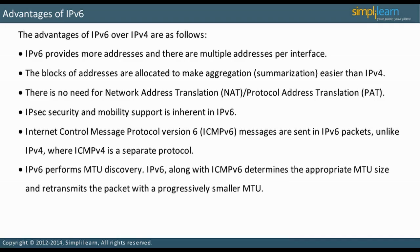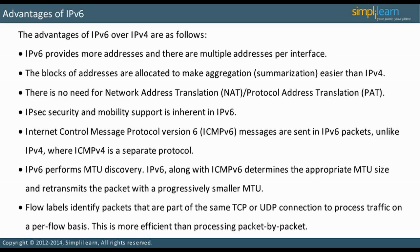In combination with ICMPv6, IPv6 determines the appropriate MTU size. It retransmits the packet with a progressively smaller MTU until it arrives at the destination. Flow labels identify packets that are part of the same TCP or UDP connection. Therefore, multi-layer switches and routers can process traffic on a per-flow basis, which is more efficient than processing packet by packet.